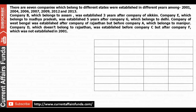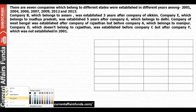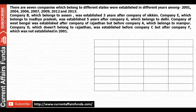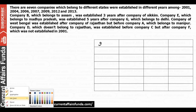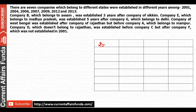Now for the second question: there are seven companies which belong to different states. They were established in different years among 2001, 2004, 2006, 2007, 2009, 2012, and 2013. The seven companies are identified by letters, and each belongs to a different state. The states are given in the clues. Now, all the gaps have been written — let's see the clues.